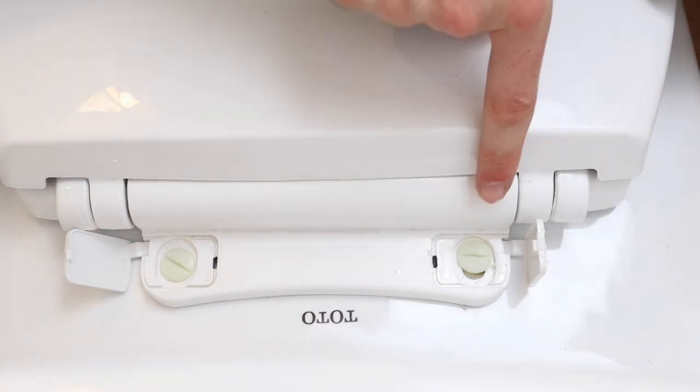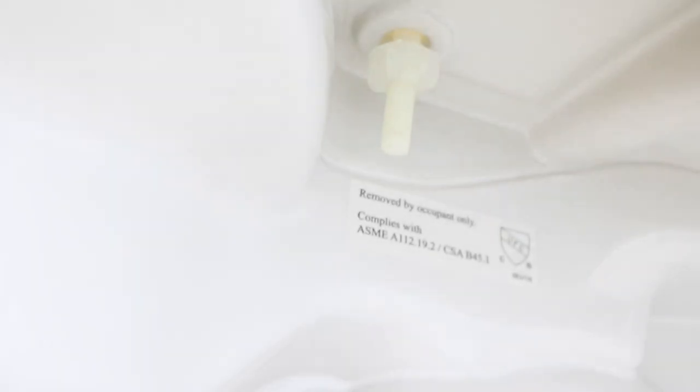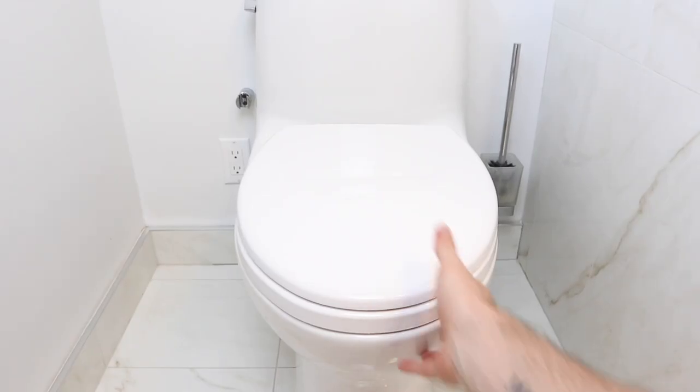Remove the screws on both sides of the toilet seat and you can find a nut at the bottom of the toilet. Make sure to put them in a safe spot because you don't want to lose them. Once you've removed both of the screws, you can now go ahead and remove your toilet seat.